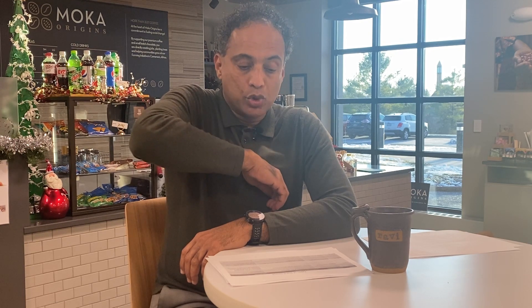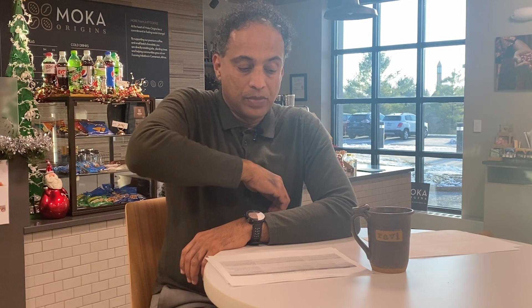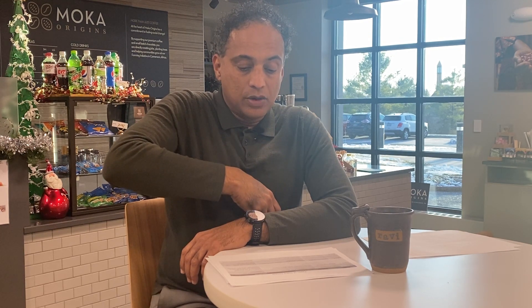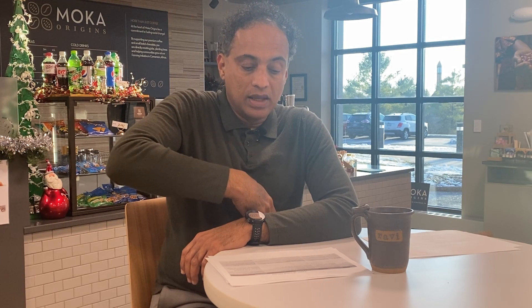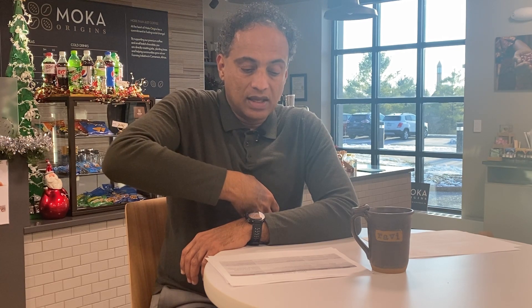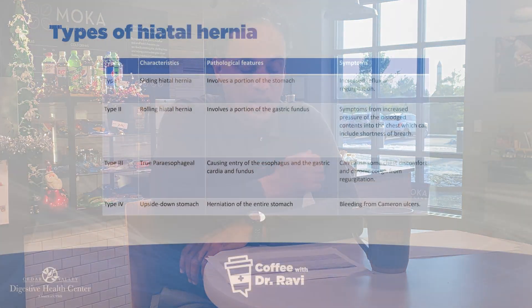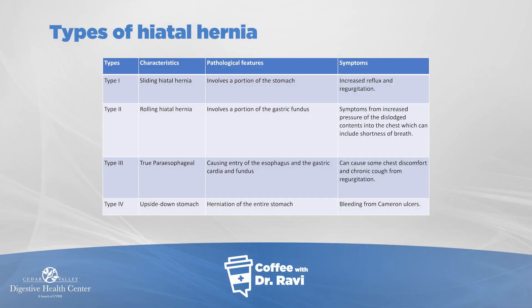In Type 2, there's a portion of the stomach that sits adjacent to the diaphragm and adjacent to the esophagus, and that portion comes up. In a true paraesophageal hernia, the esophagus, the stomach, and the cardia can all come up. So in other words, it's a relative degree of how much stomach gets into the chest.